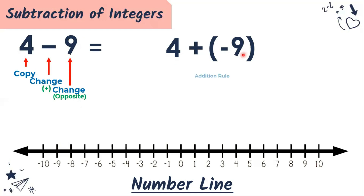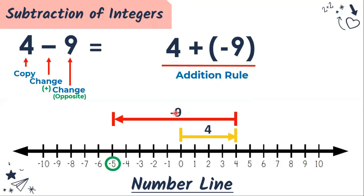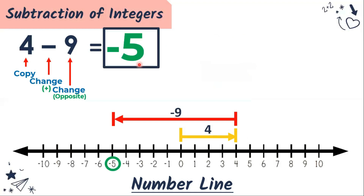Then let's proceed to the addition rule. Our first number is positive, so we're going to use a yellow arrow — four units to your right. Plus negative nine: we use a red arrow, nine units to your left. That means 4 plus negative nine is equal to negative five. Same way, 4 minus 9 is equal to negative five.